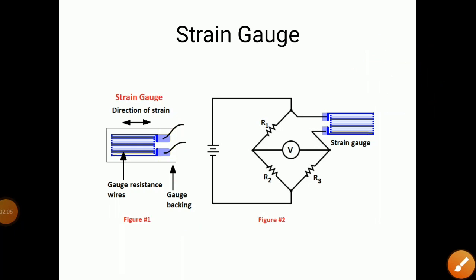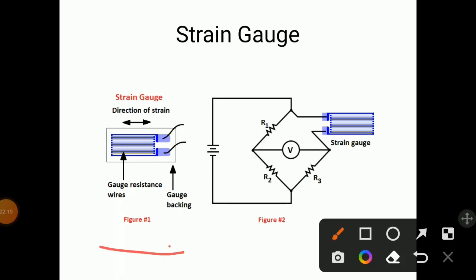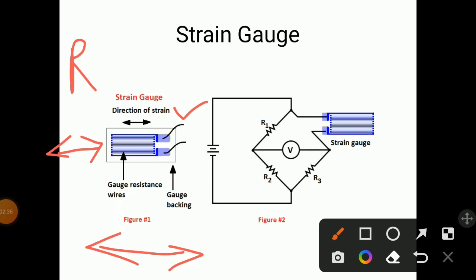In case of strain gauge, when we apply load, the strain gauge gets elongated. The direction of strain is along the strain gauge, so these wires get stretched — there is deformation of the wire. Because of this, the resistance of the wire changes. As you apply force, there will be a change in resistance. Force is directly proportional to change in resistance — F is directly proportional to R. As you apply force, length changes, and because of that, resistance also changes.